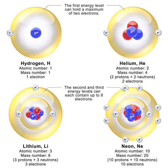A fast neutron is a free neutron with a kinetic energy level close to 1 MeV, hence a speed of approximately 14,000 km per second. They are named fission energy or fast neutrons to distinguish them from lower-energy thermal neutrons and high-energy neutrons produced in cosmic showers or accelerators. Fast neutrons are produced by nuclear processes such as nuclear fission. Neutrons produced in fission have a Maxwell-Boltzmann distribution of kinetic energies from 0 to approximately 14 MeV, a mean energy of 2 MeV, and a mode of only 0.75 MeV, which means that more than half of them do not qualify as fast and thus have almost no chance of initiating fission in fertile materials, such as U-238 and Th-232.